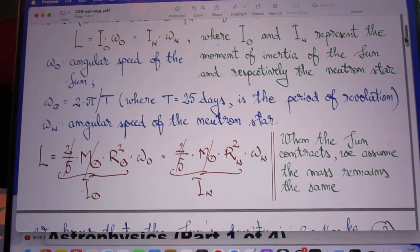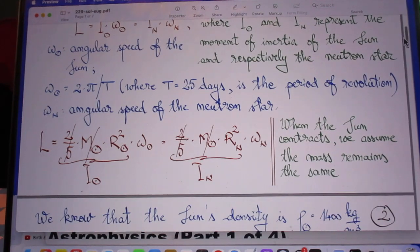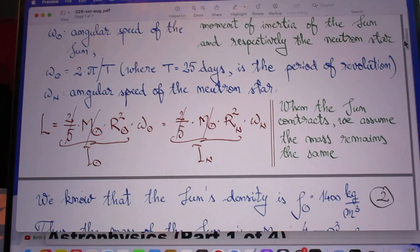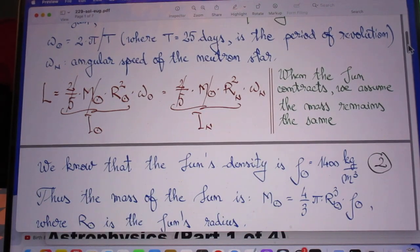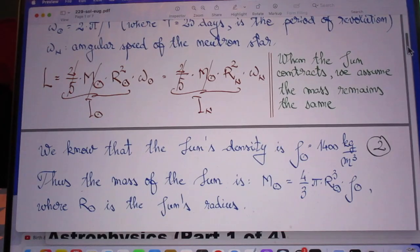And you see here, the angular momentum capital L is I omega. Where I sun and I n represent the moment of inertia of the sun and the neutron star. He now spells neutron star correctly. Omega is two pi divided by T, pretty classic. And capital T for the sun, we have assumed is 25 days, independent of where you are on the sun.